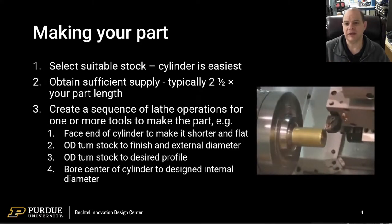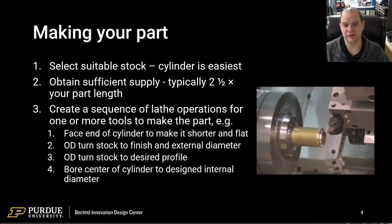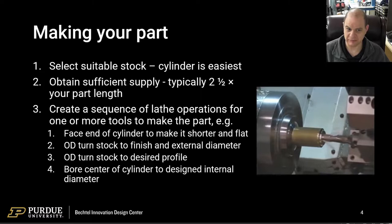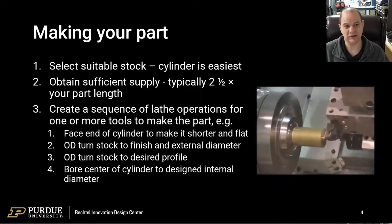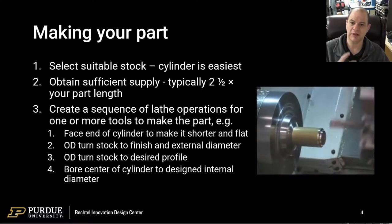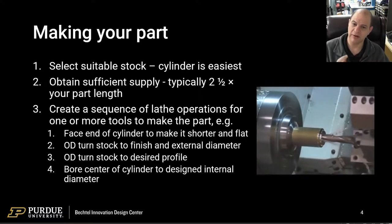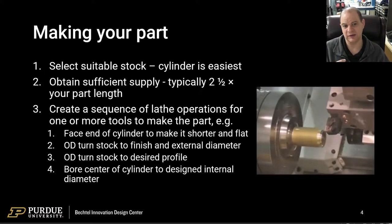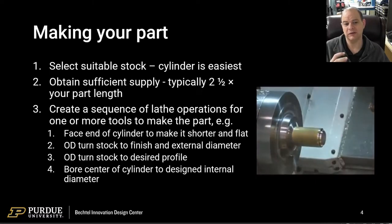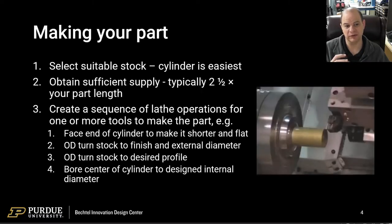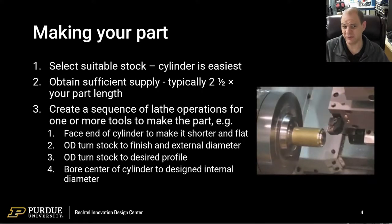So the process of making a part on a lathe: the first thing you need to do is select suitable stock, and on a lathe starting from a cylinder is definitely the easiest. There are always ways of accommodating odder designs and shapes, but honestly pick a cylindrical size. Typically you want to buy stock at a minimum about two and a half times the length of the part. If you can design your parts at the outer diameter of the cylinder, you don't even have to do an OD turning operation to get it to final size, though you may need to for finish.